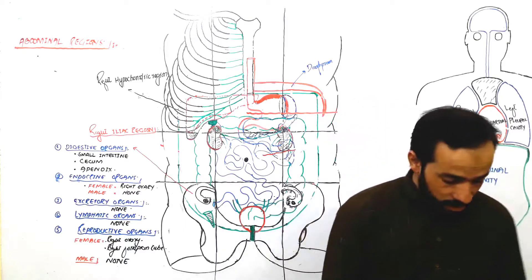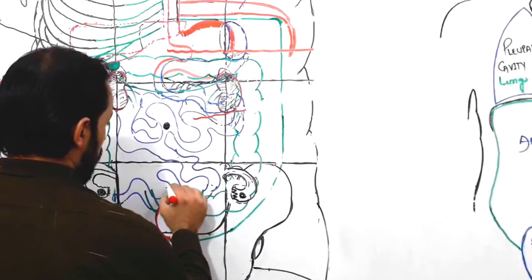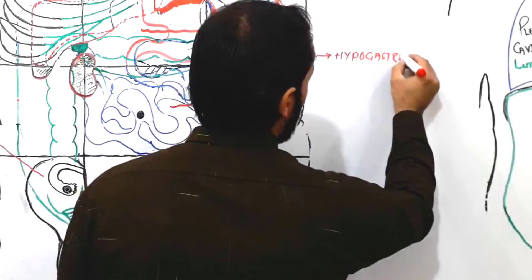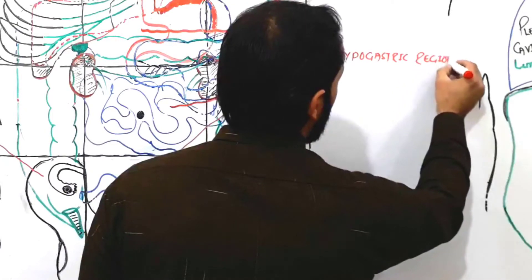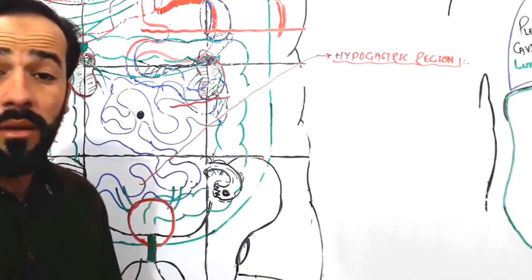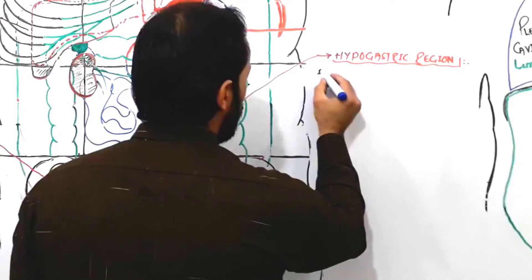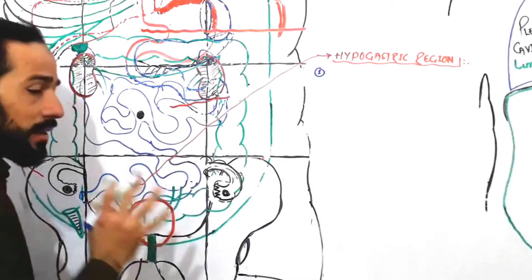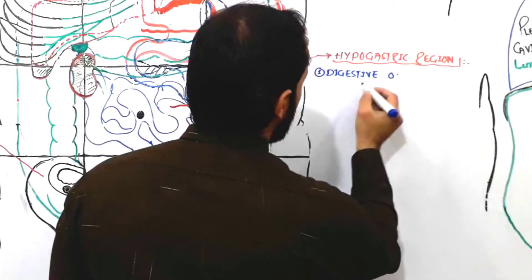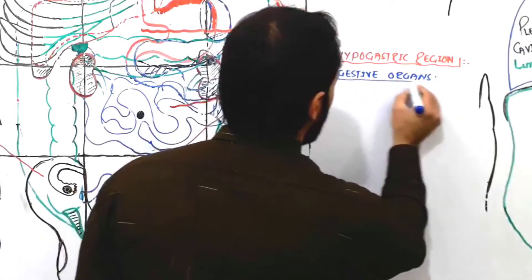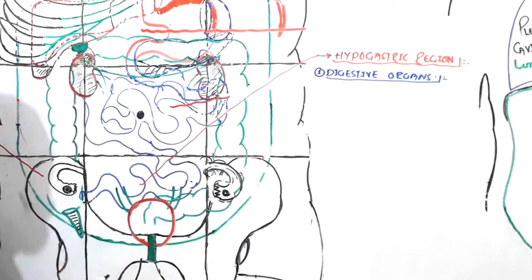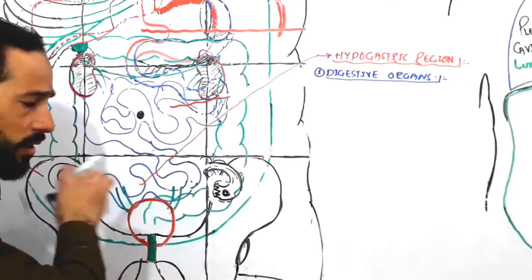The region below the umbilical region is called the hypogastric region. The first group of organs found here are the digestive organs. The first digestive organ present is the small intestine, which comes down towards the hypogastric region — though not all parts of the small intestine, as discussed in previous videos.